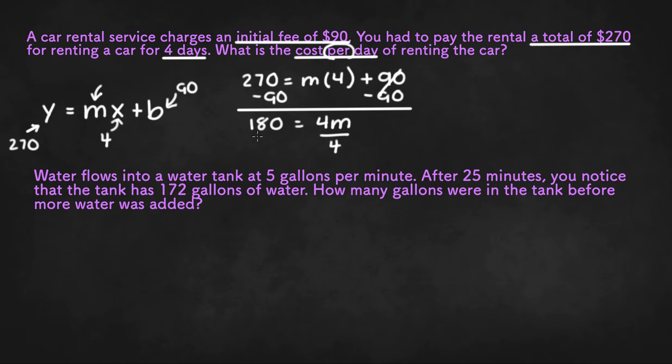Now if we divide both sides by 4, we're going to be left with 180 divided by 4 equals m, or 180 divided by 4, which is 45 equals m. So you had to pay $45 per day for renting the car. That'll be the final answer for the first example.